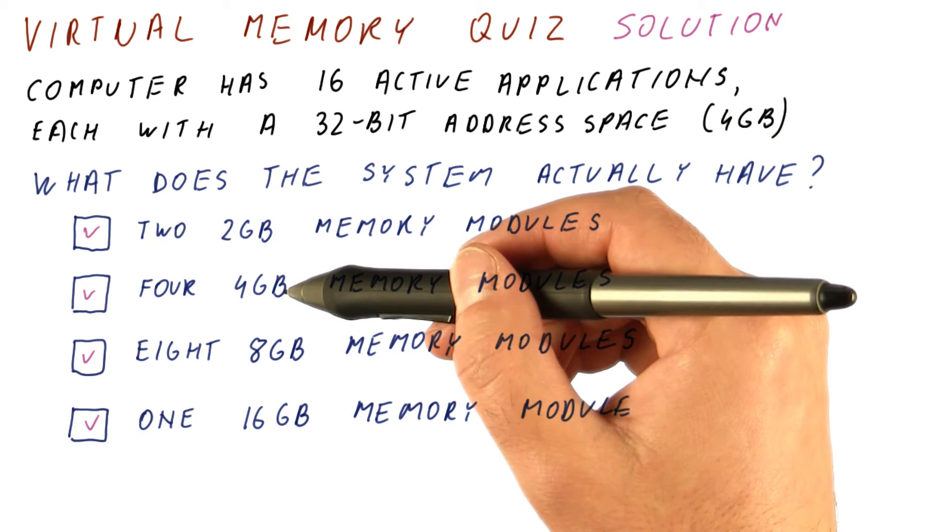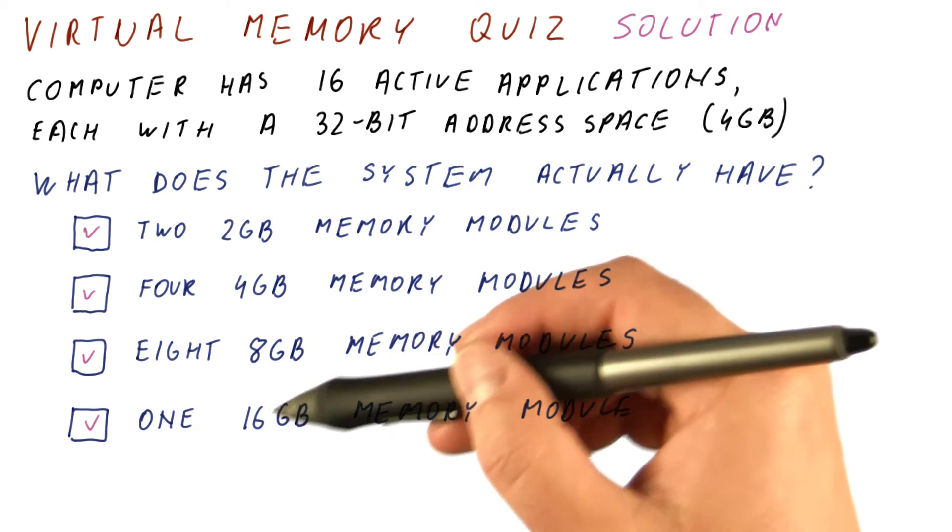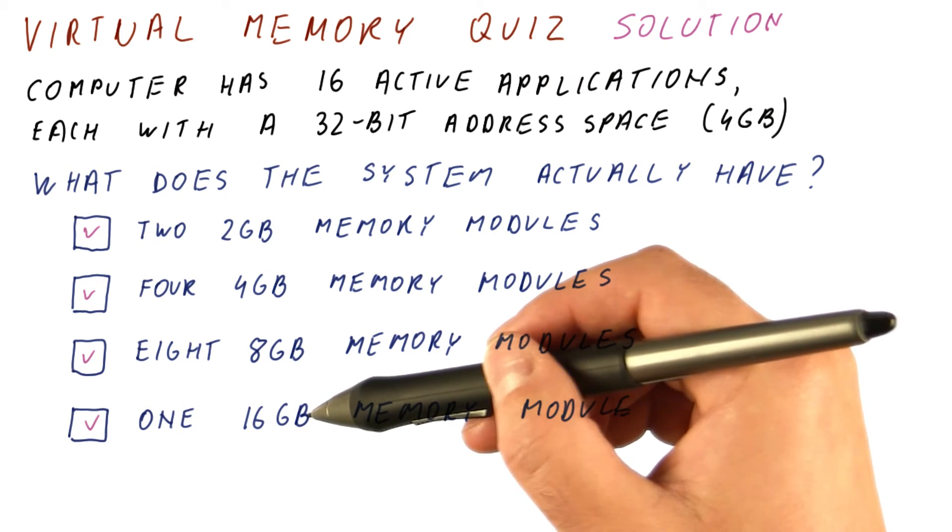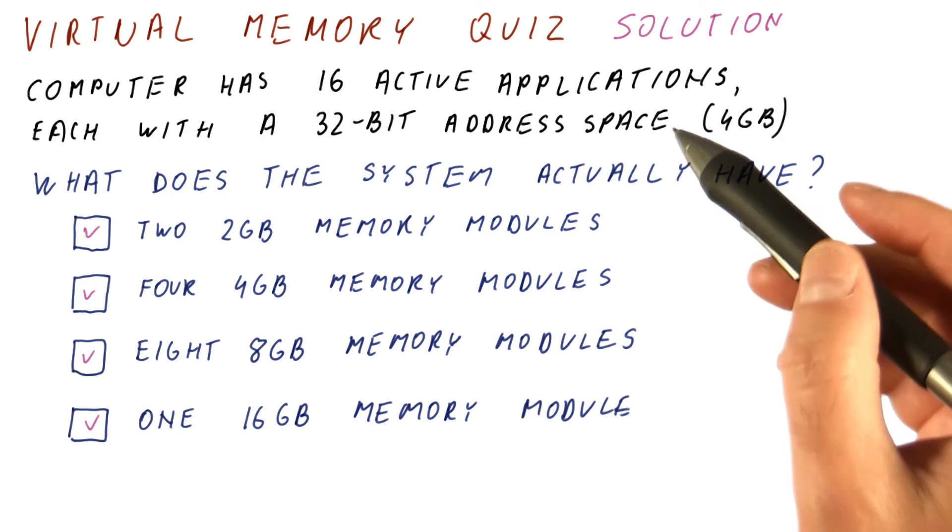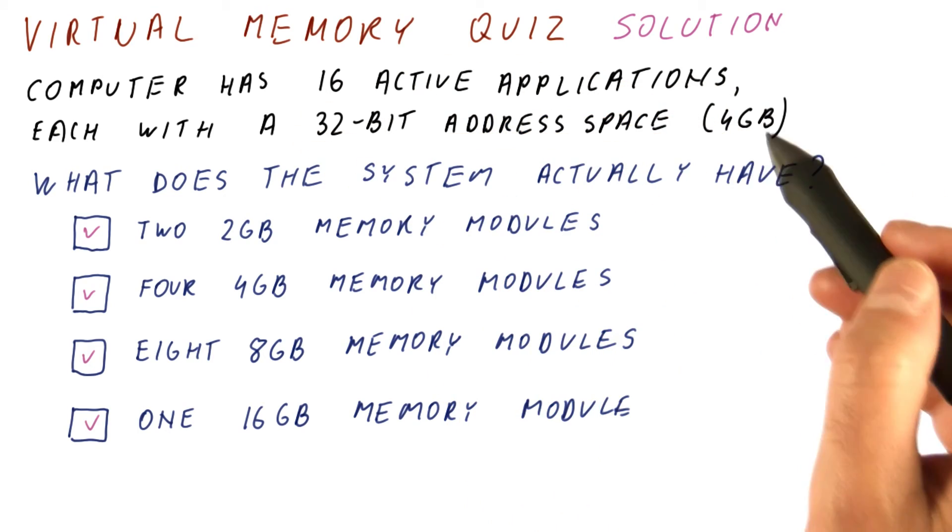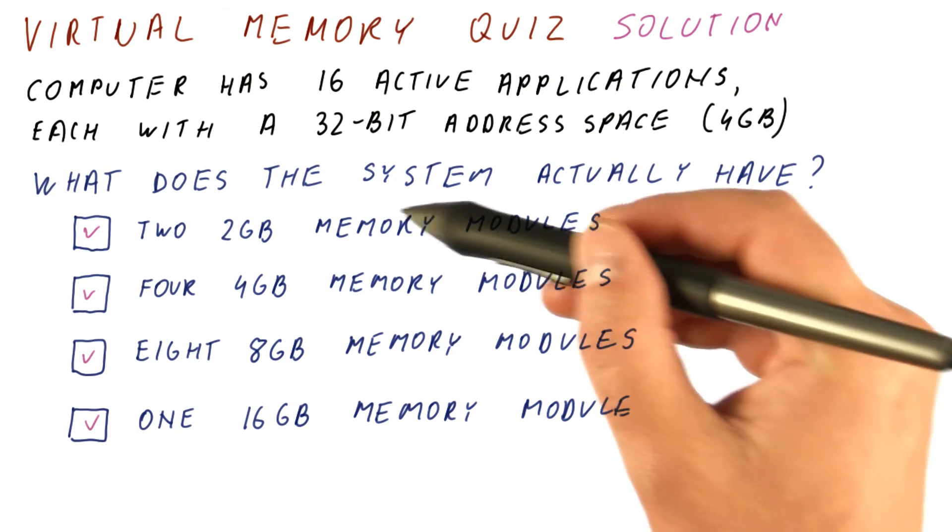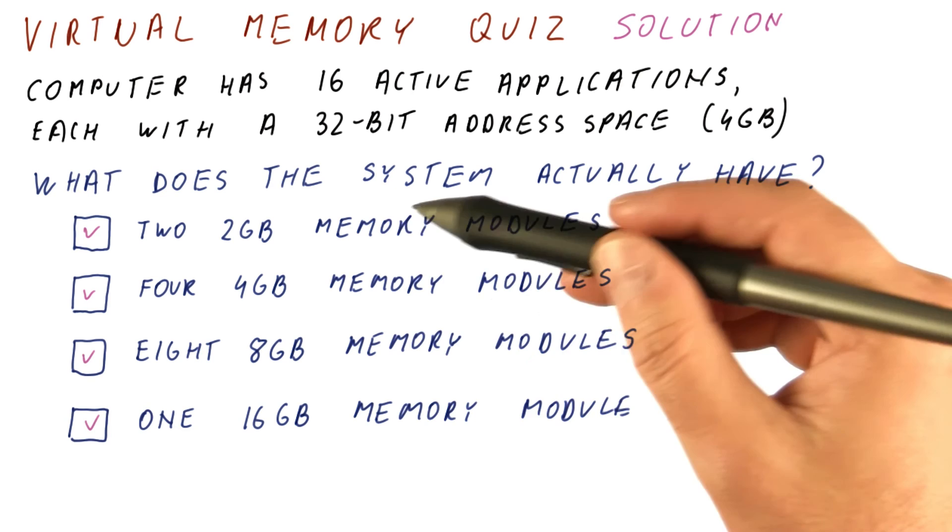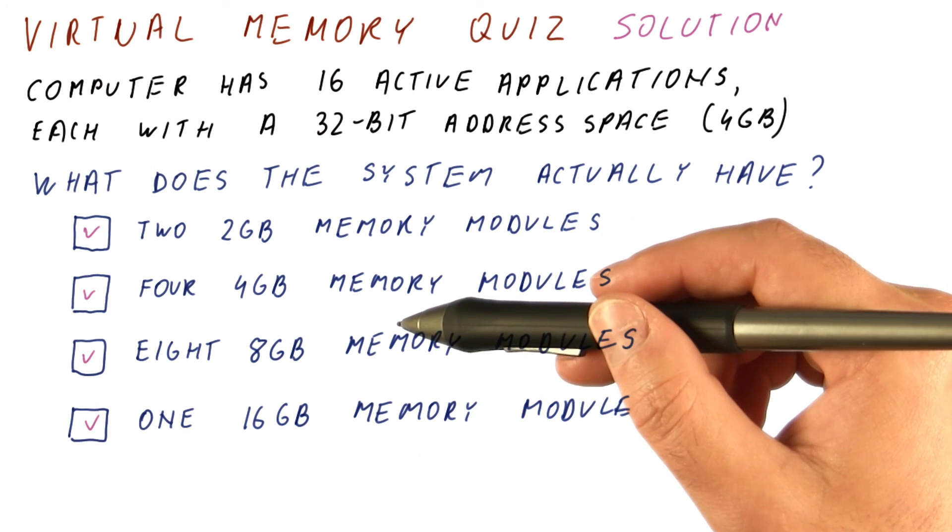We can also have more memory, even more memory, different combinations and so on. So pretty much what the applications think they have in terms of memory and what the system really has can be completely decoupled by virtual memory.